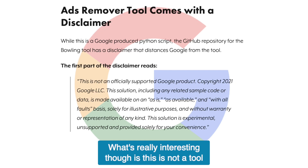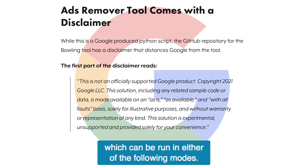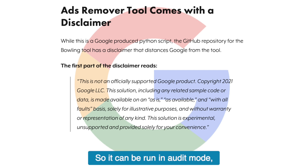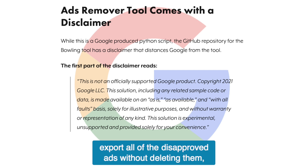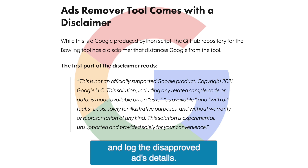What's really interesting is this is not a tool you can go to directly — it's actually a Python script which can be run in either of two modes: audit mode, which exports all of the disapproved ads without deleting them, or remove mode, which deletes all the disapproved ads and logs their details.